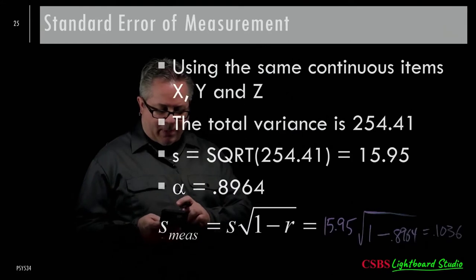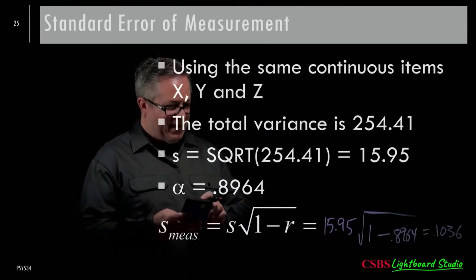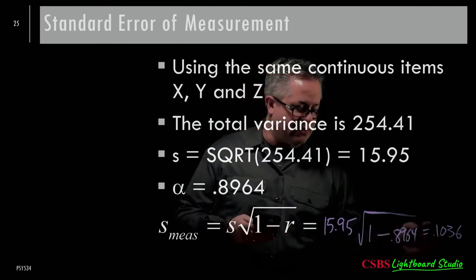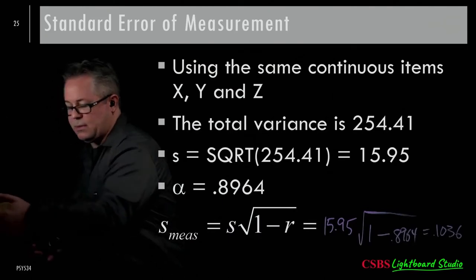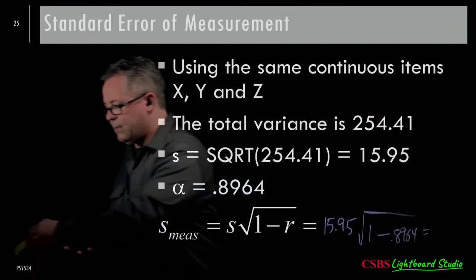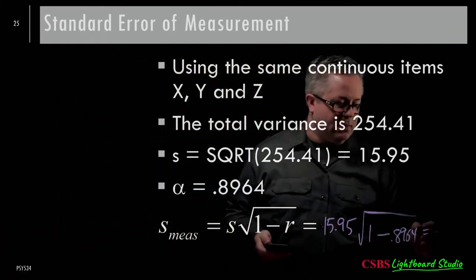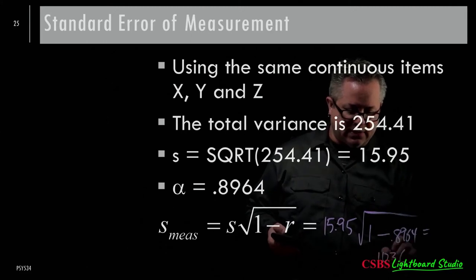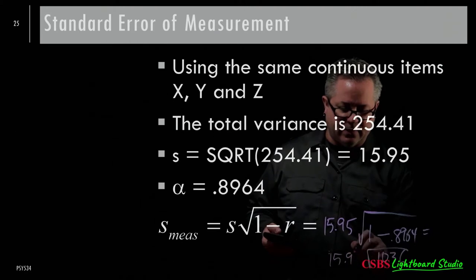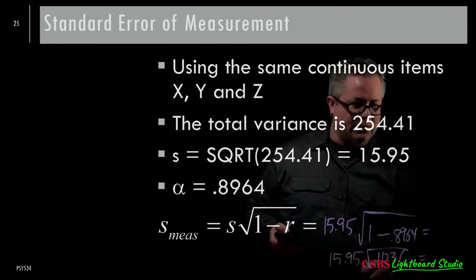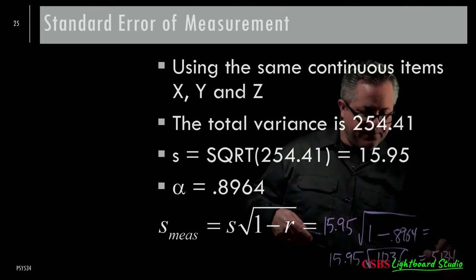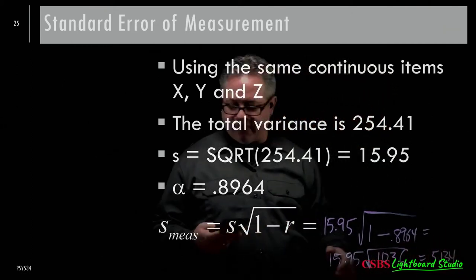One minus 0.8964 equals 0.1036. We still need to take the square root of that and multiply by 15.95. The result is 5.134 — that is the standard error of measurement, telling us how much variability or prediction error exists in the scale.